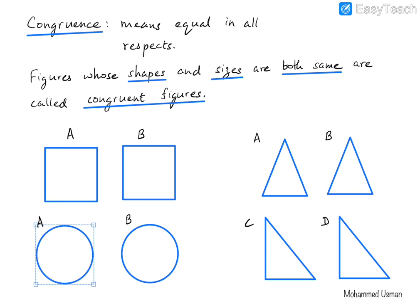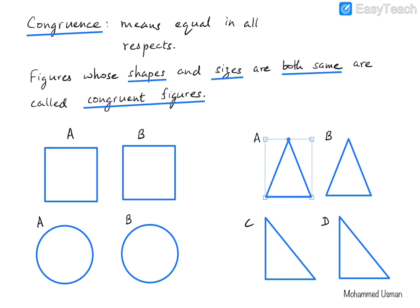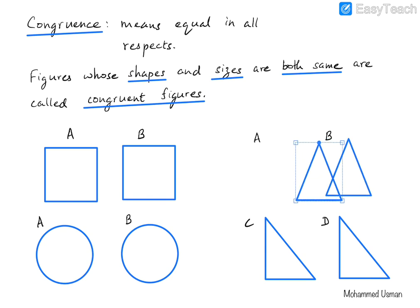In this chapter, we are going to focus on the congruence of triangles only. We will see what rules must be satisfied for two triangles to be congruent. Triangle A and triangle B are congruent — if we take triangle B and put it on top of triangle A, it completely covers it.